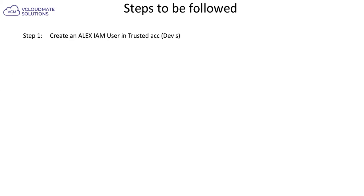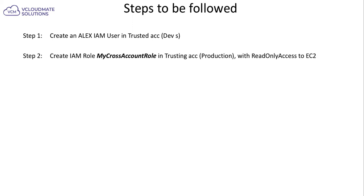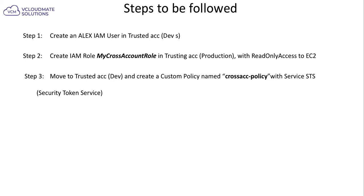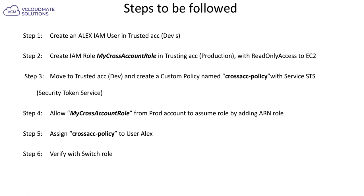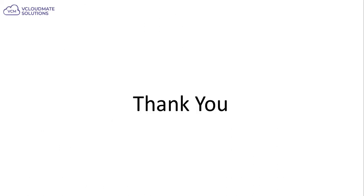To run through the steps once more: I created an IAM user in the trusted account, created a role in production with read-only access to EC2, then created a new policy in the development account to allow assuming that role using STS. I added the ARN of the cross-account role into the policy, assigned the policy to LX, and finally verified everything using the switch role. That's all — have a great day ahead, thank you.